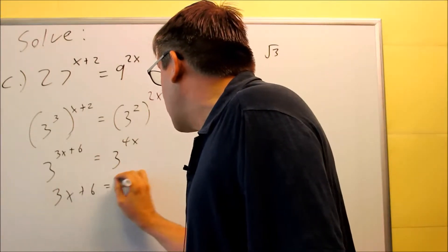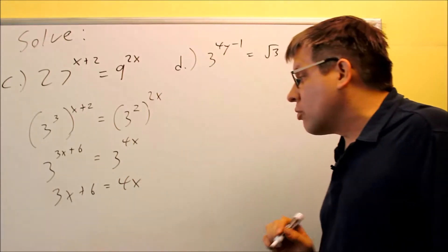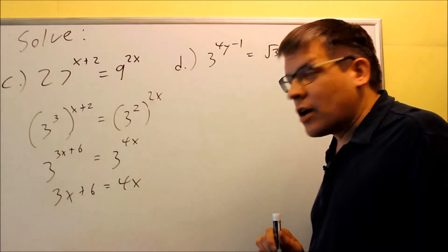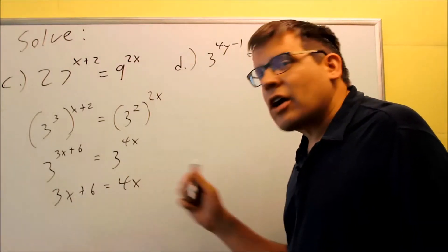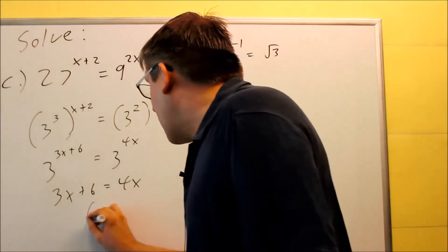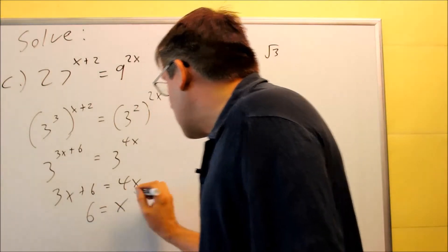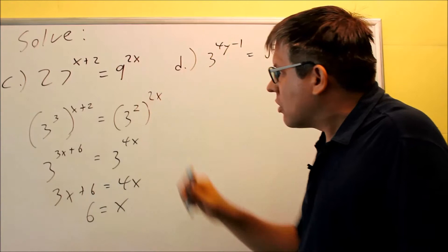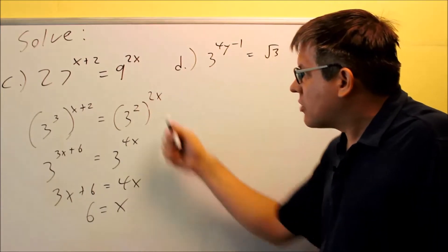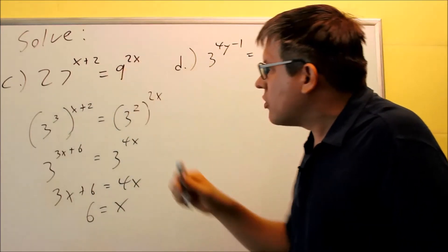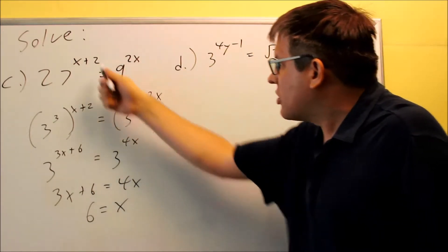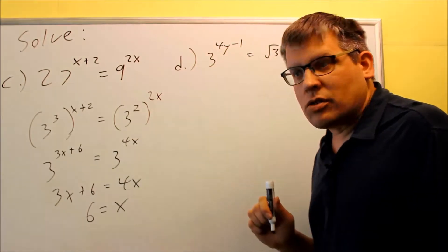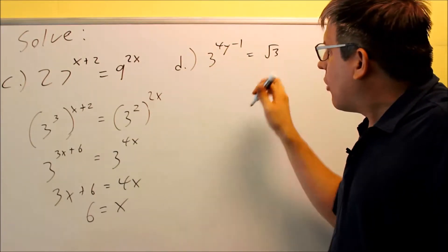The bases are now equal, so I set the exponents equal: 3x plus 6 equals 4x. Subtracting 3x from both sides gives x equals 6. Substituting 6 on both sides balances the equation correctly.